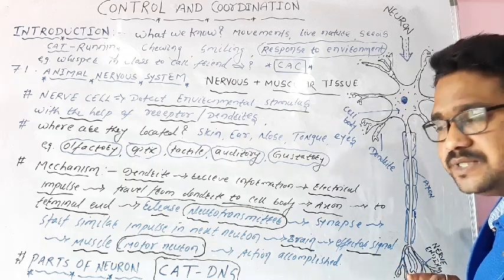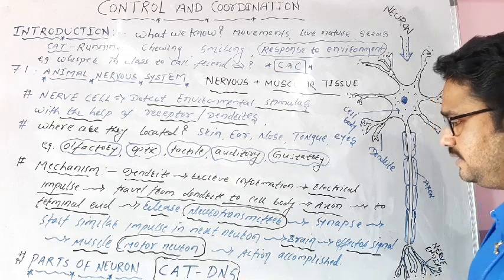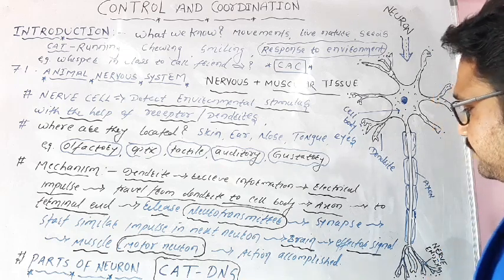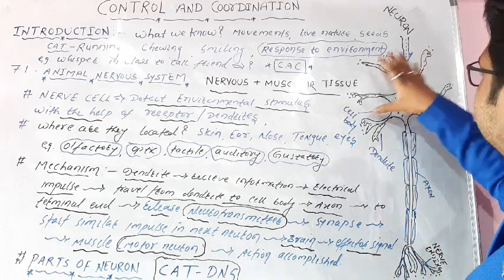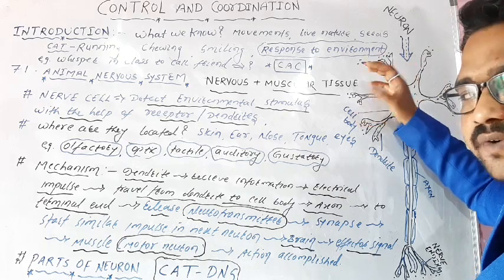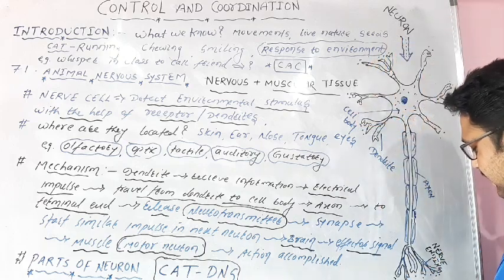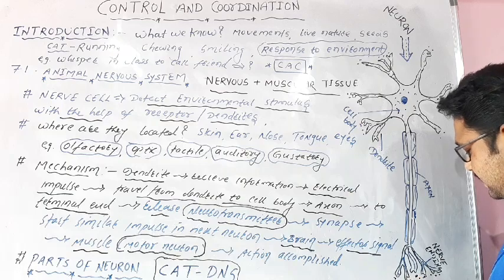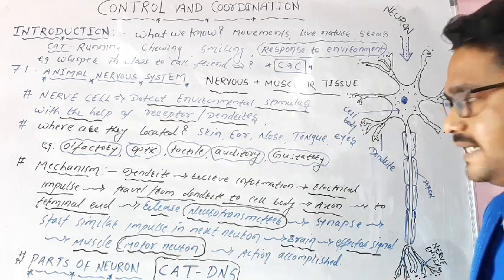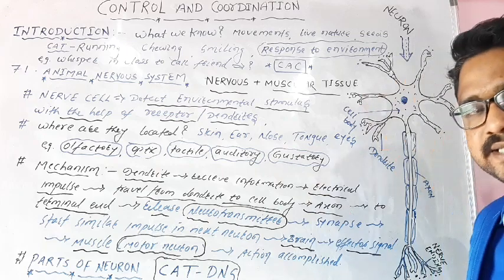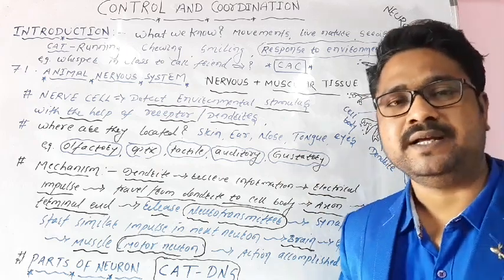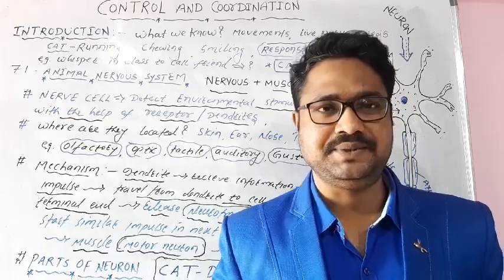D stands for dendrites that receive information from the environment. N is the neurotransmitter, which is the chemical information sent by the neuron. And S stands for the synapse or gap between the two neurons.